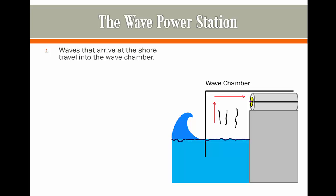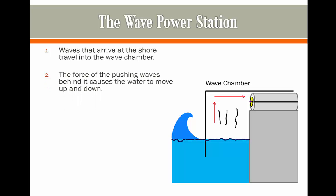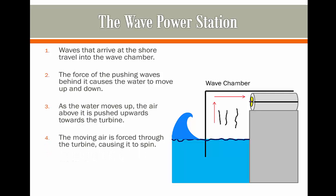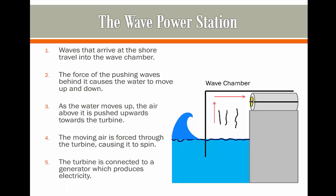This happens because firstly, the waves that arrive at the shore can travel into the chamber. As they're in the chamber and they're moving, the force of these pushing waves against the chamber are going to cause the water to move up and down. As the water is moving up and down, the air above it is pushed upwards towards the turbine. The moving air is forced through this turbine causing it to spin, and of course the turbine is connected to a generator which is going to start to produce electricity.